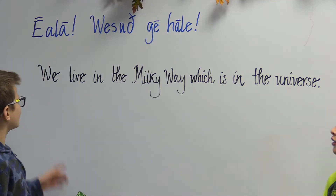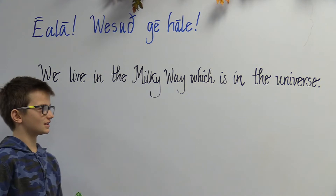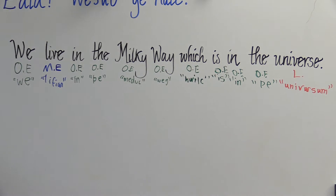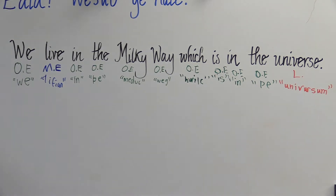We began sharing our sentences with the rest of the class. We let classmates guess before we revealed the language of origin. We didn't share them all, but we shared enough that we were able to see that most of the words we were using were from Old English. One sentence was: 'We live in the Milky Way, which is in the universe.' What's interesting you're noticing? The universe is Latin — I would have thought it was Old English.